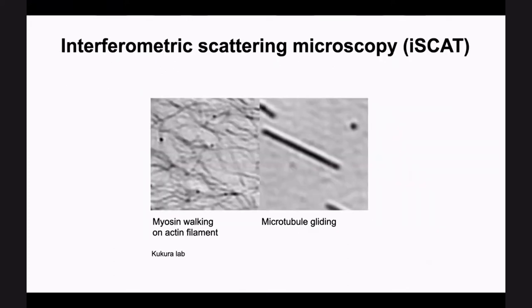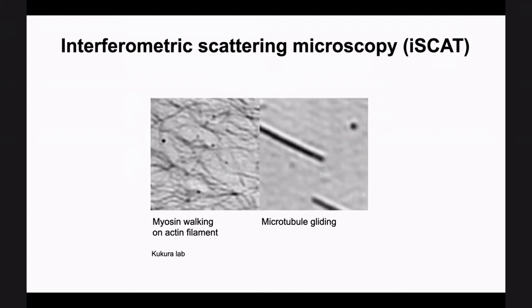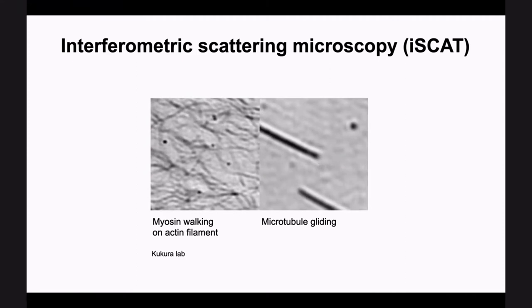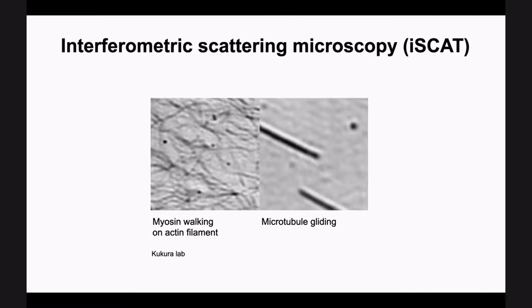We tried to think more about how to do this. These pili outside the cell should scatter photons, so how do we reveal this? I'm going to introduce interferometric scattering microscopy, iSCAT. This was a technique pioneered by the lab of Vahed Sandohar, and in the last 10 years there has been a lot of effort applying iSCAT to biology. The lab of Philip Kukura at Oxford started publishing papers about visualizing biological motors and polymers.